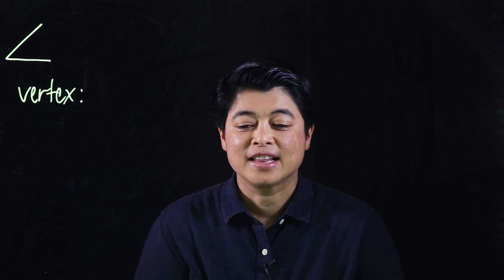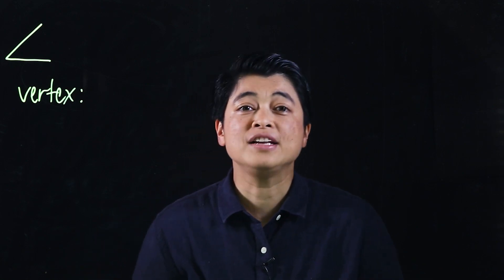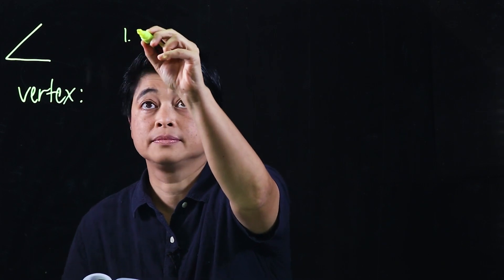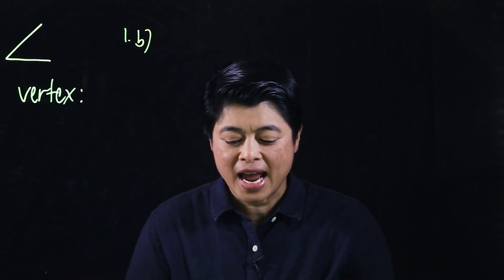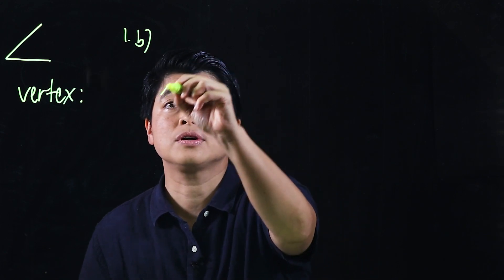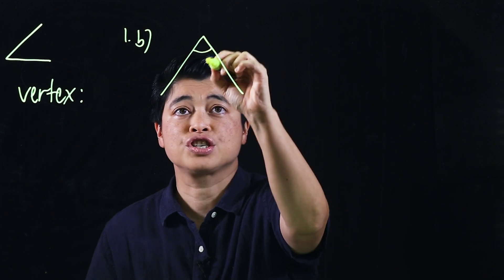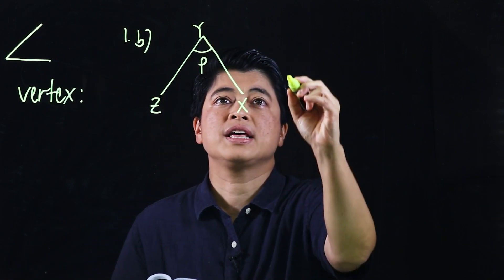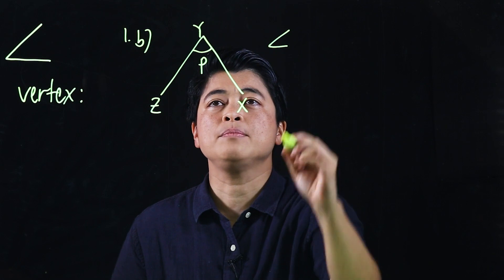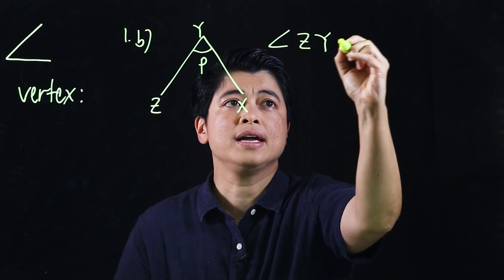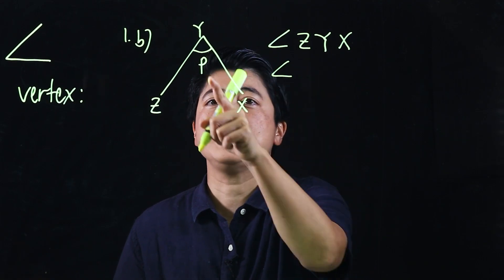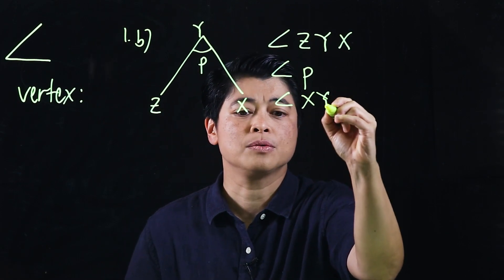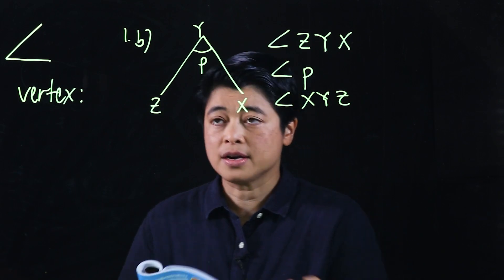To demonstrate, we'll do some exercises. The first exercise is from page 87, which says 'name each angle in different ways.' So this angle can be named as angle ZYX, it can also be named as angle P, and it can also be named as angle XYZ.